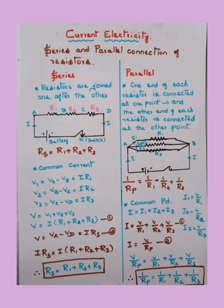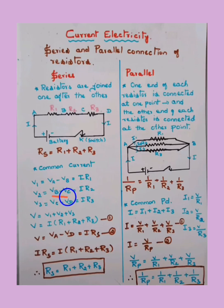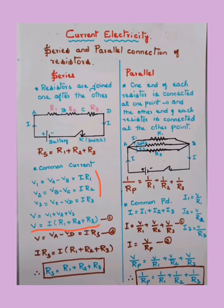Now let's prove the series formula. By Ohm's law, the potential between points A and B is V1 = IR1, between B and C is IR2, and between C and D is IR3. The total potential is V = V1 + V2 + V3. Substituting these values, we get V = I(R1 + R2 + R3). Take this as equation number one.